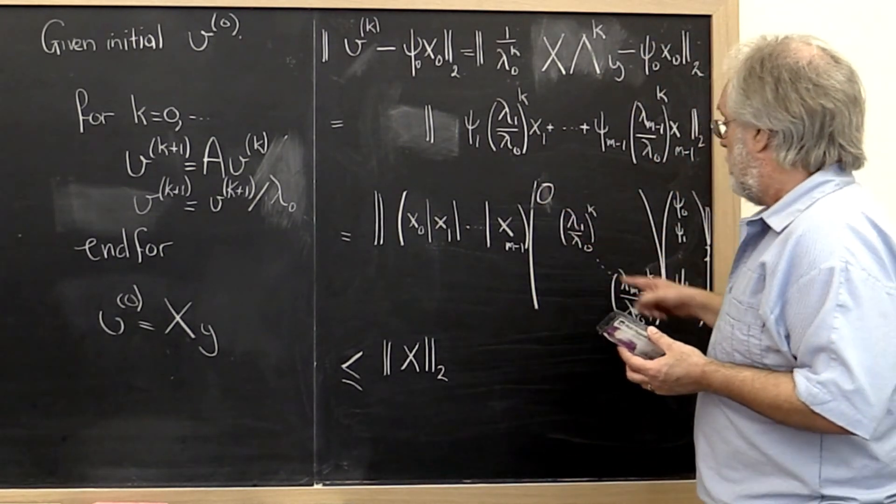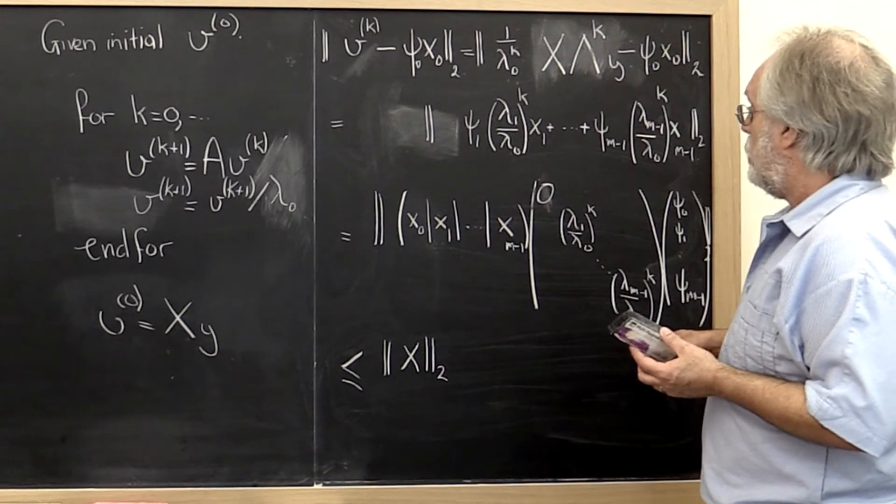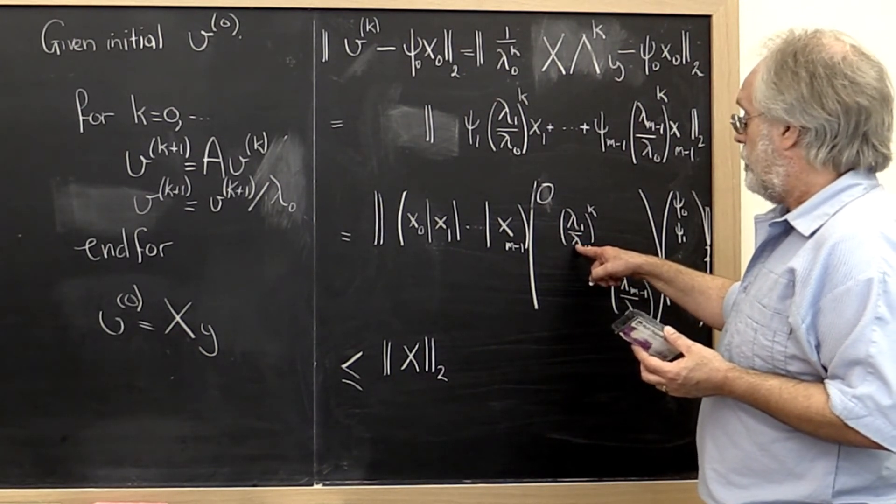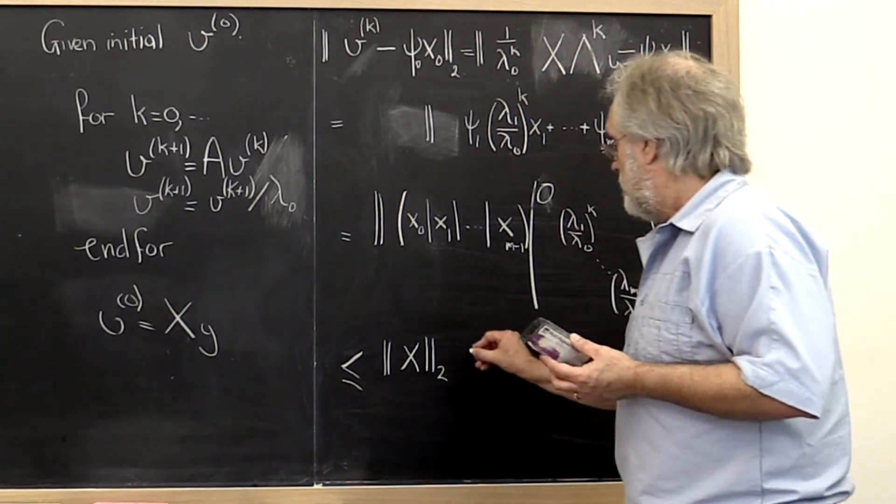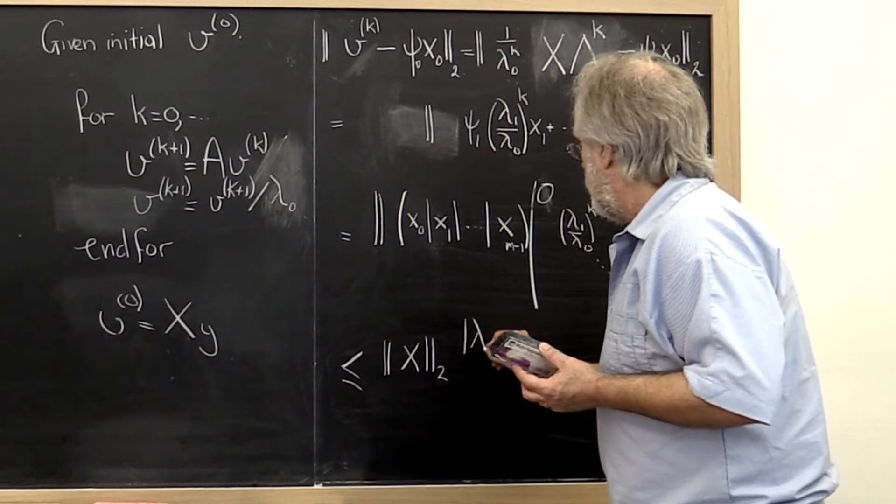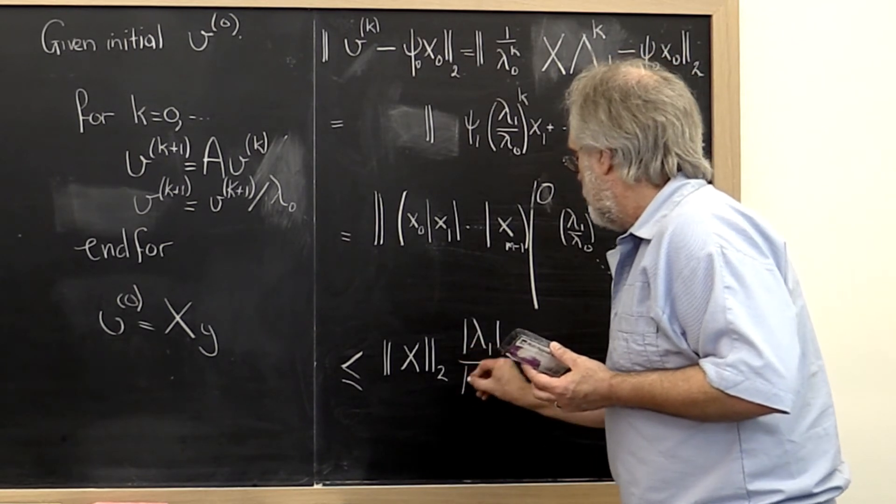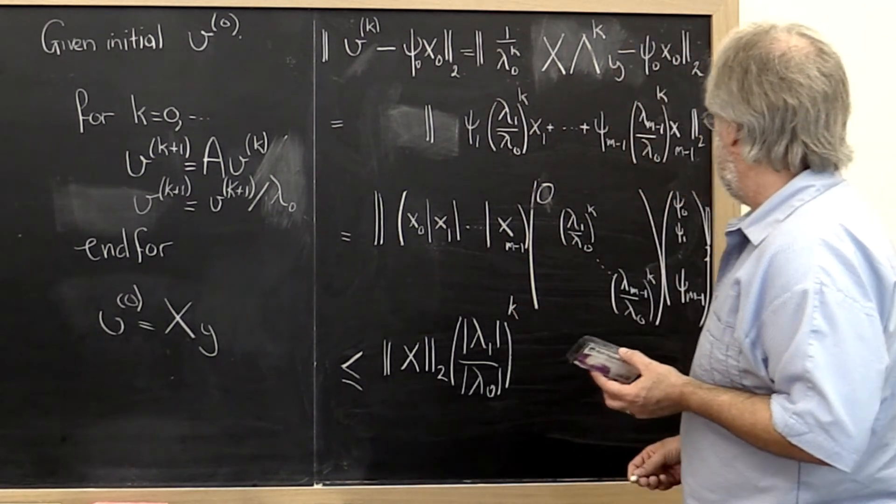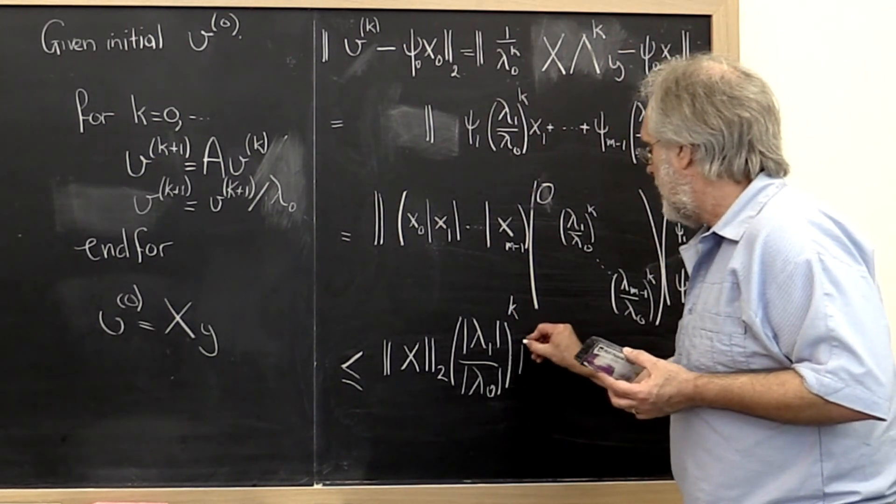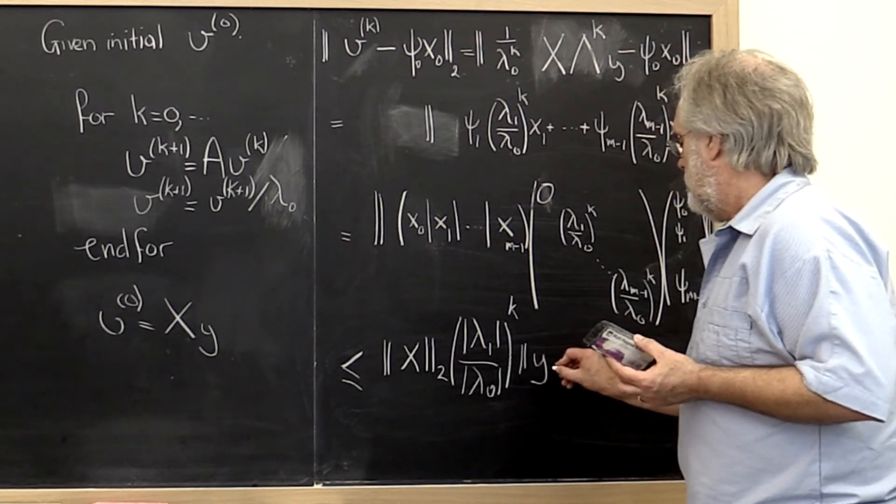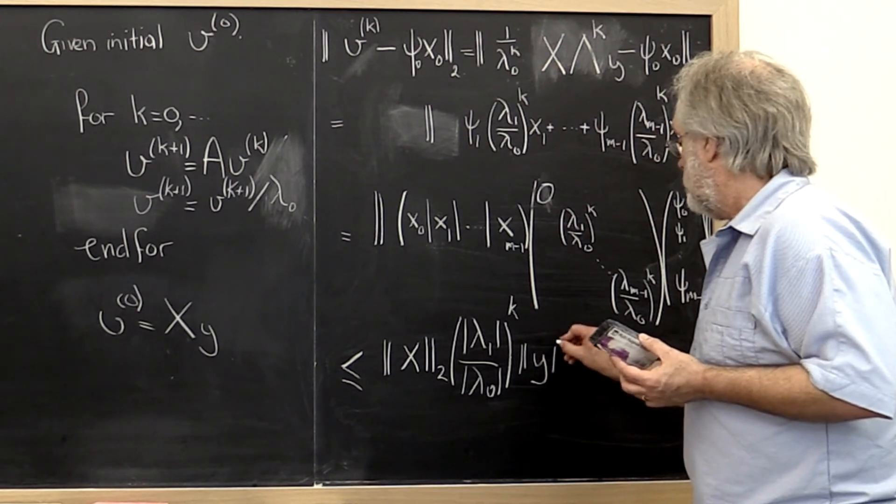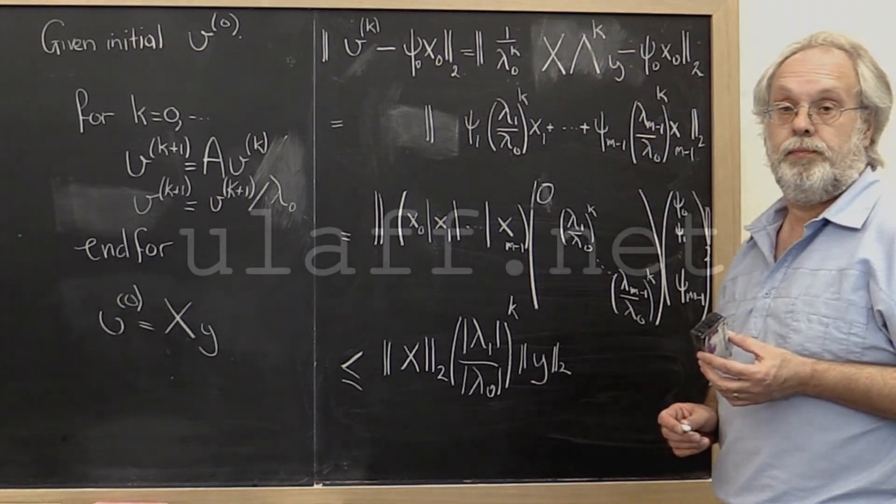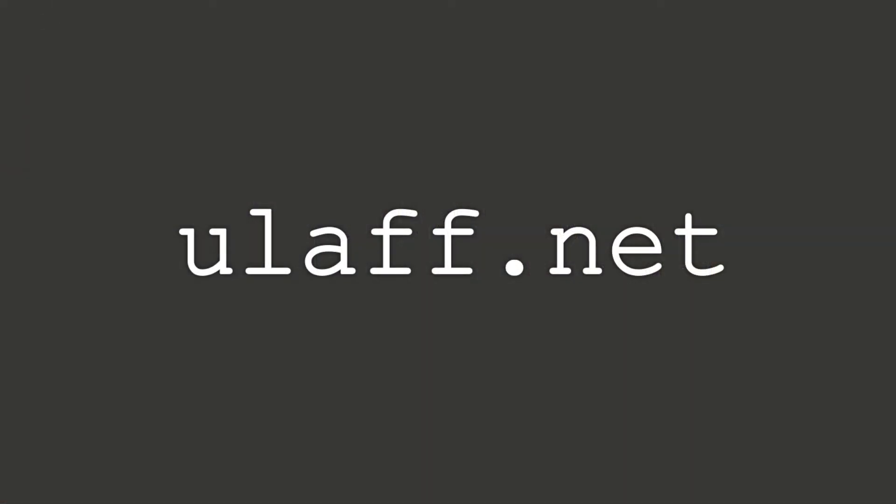It means that we get this less than or equal to the 2-norm of x times the 2-norm of this diagonal matrix. But notice that the 2-norm of the diagonal matrix is equal to the absolute value of the largest entry on its diagonal, which happens to be this right here. So we get the absolute value of lambda 1 over lambda 0 to the k power, and then times the 2-norm of vector y.